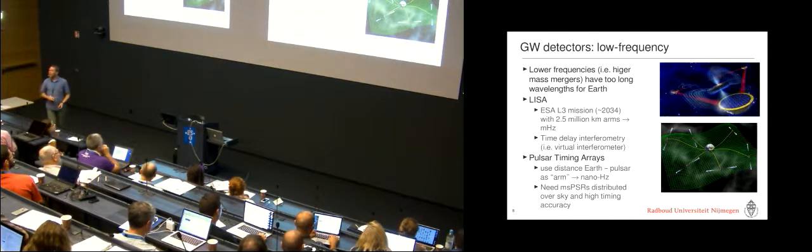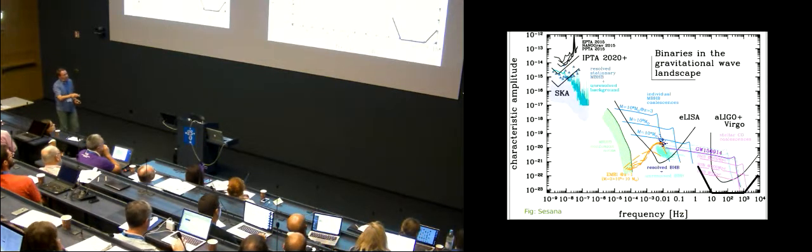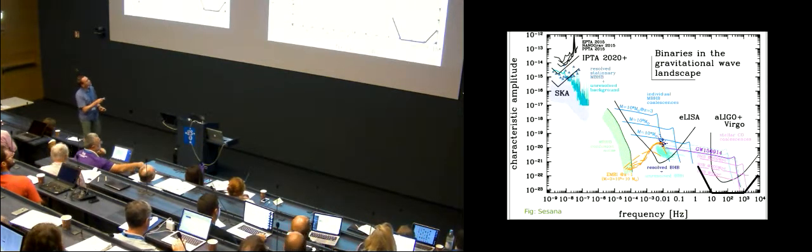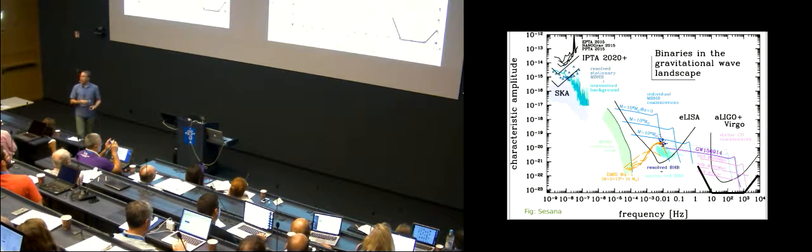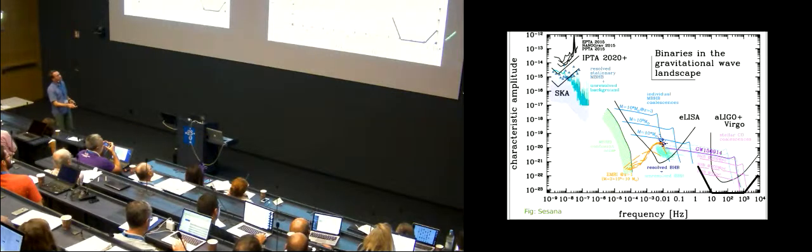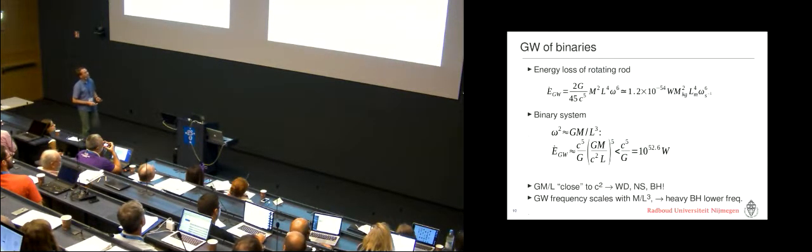However, for binary stars, this is not so relevant. And so what you see here, it's a quite busy plot, but I just want to show that over essentially 13 orders of magnitude in frequency, there are different detectors, operational or planned, and they all have associated sources. The rest of the talk, I will mainly talk about the detectors on the right-hand side.